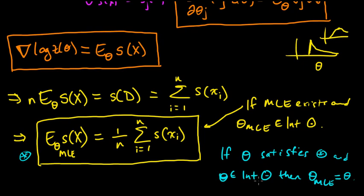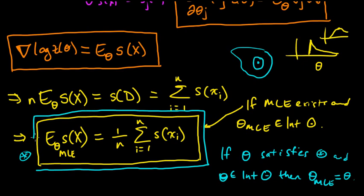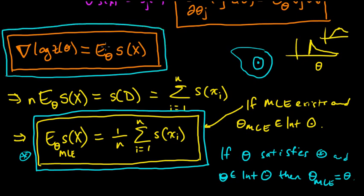So I'll leave that as an exercise if you want to prove that. And just briefly, the interior, what that means is that a point is in the interior if there's a ball around that point that's contained in the set. So that's a very nice characterization of the MLE, and this is also a very nice property here, characterization of the expected value of this sufficient statistic.